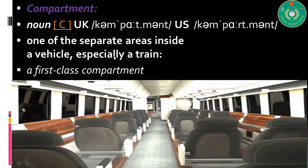The next word is 'compartment' — it's a countable noun. UK pronunciation: compartment. US pronunciation: compartment. Note the difference: in the US pronunciation the R sound is pronounced, while in the UK pronunciation it is not. Its meaning is one of the separate areas inside a vehicle, especially a train. Example: 'A first class compartment.'